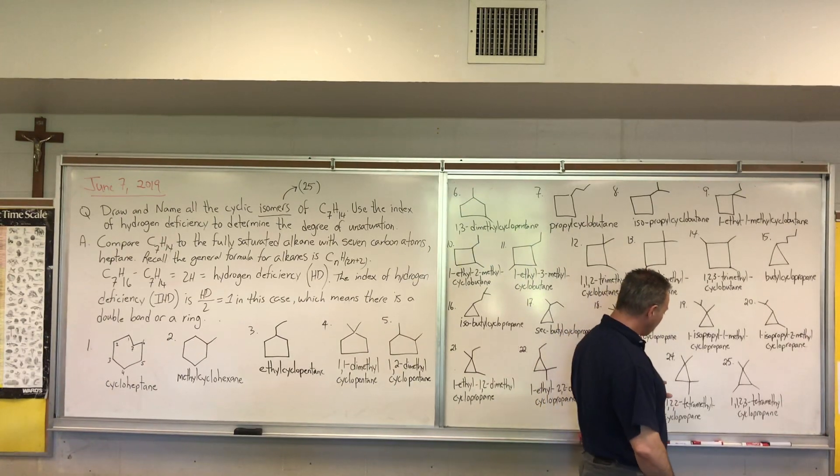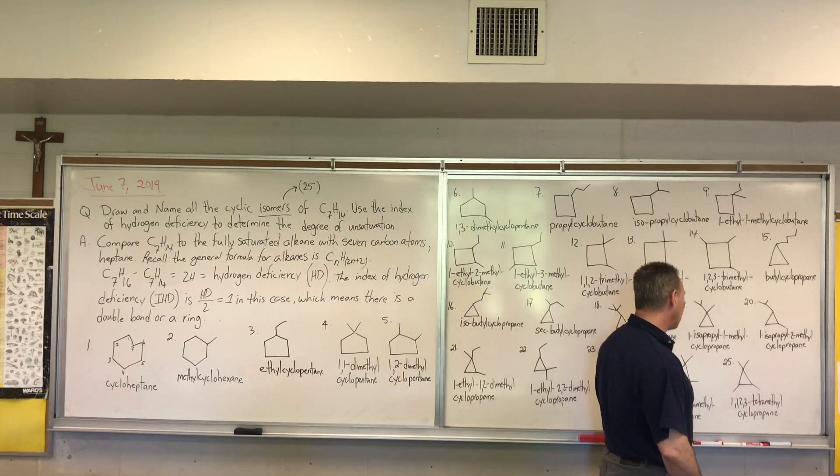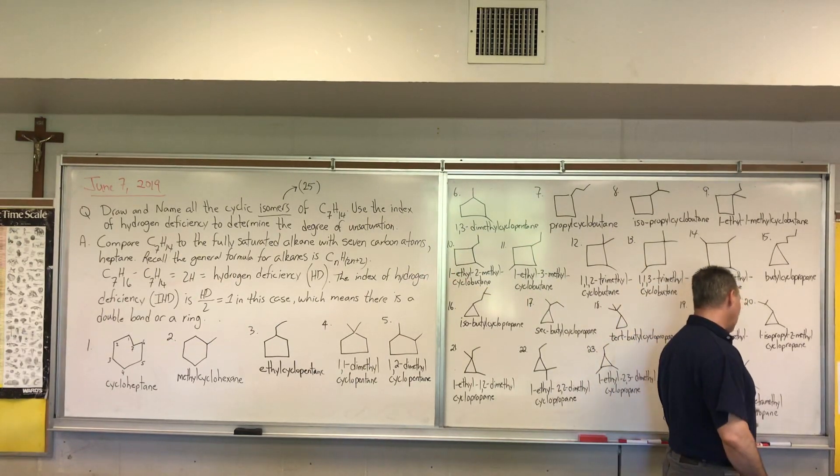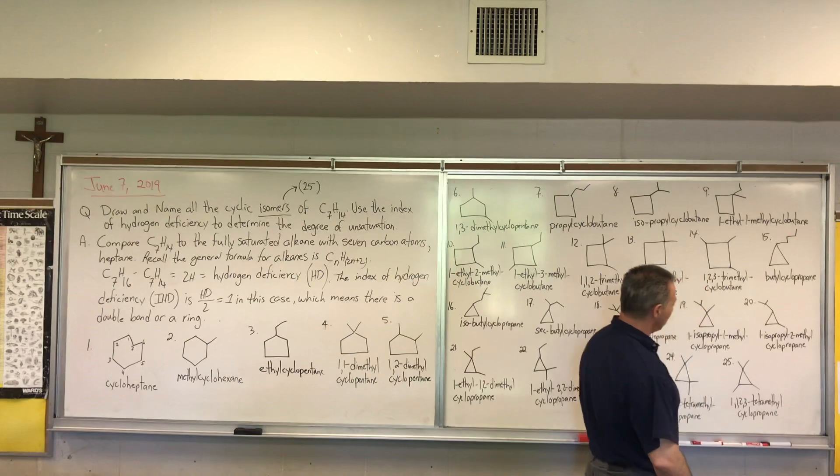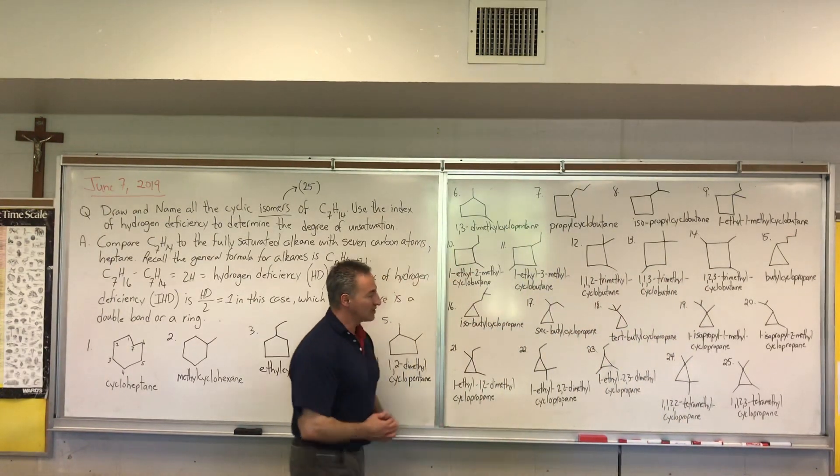And then I make them all methyl groups. And I get 1,1,2,2-tetramethyl cyclopropane. Or 1,1,2,3-tetramethyl cyclopropane. If I've left anything out, let me know. I don't think so though. So I have 25 different possibilities.